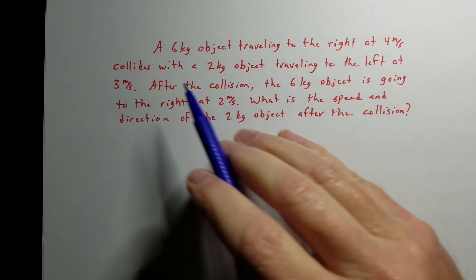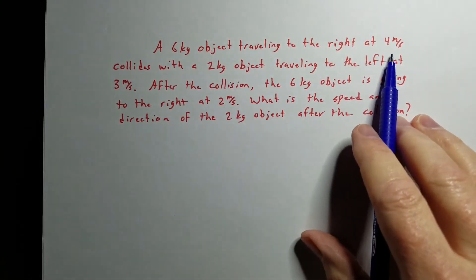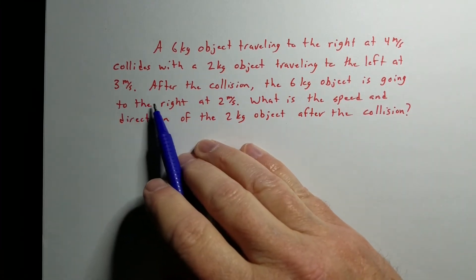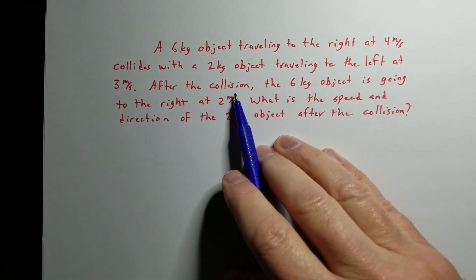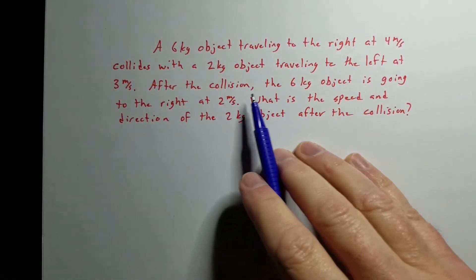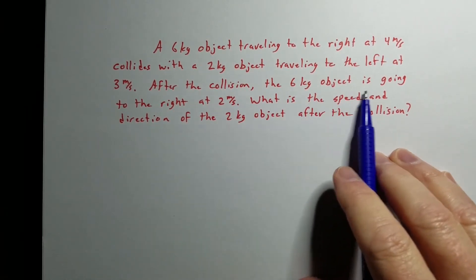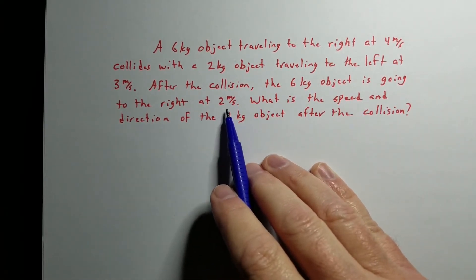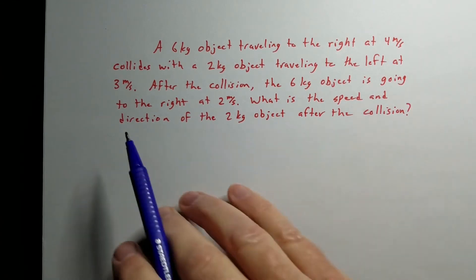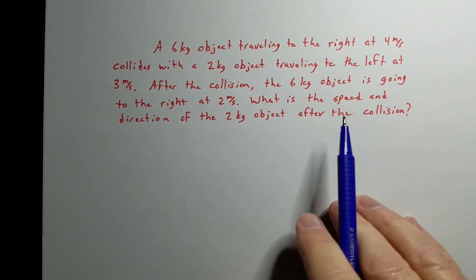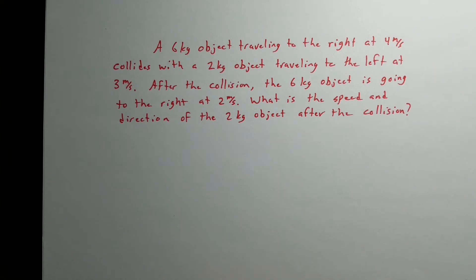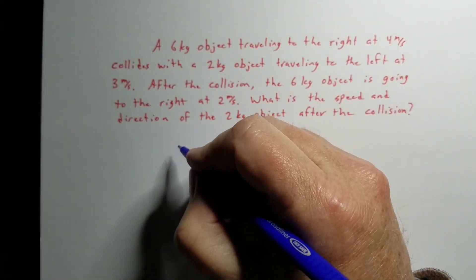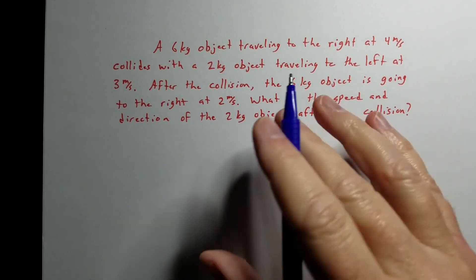For this first example, we have a 6 kg object traveling to the right at 4 m/s colliding with a 2 kg object traveling to the left at 3 m/s. After the collision, the 6 kg object is going to the right at 2 m/s. We need to find the speed and direction of the 2 kg object after the collision. I always like to start with a picture to organize the information.